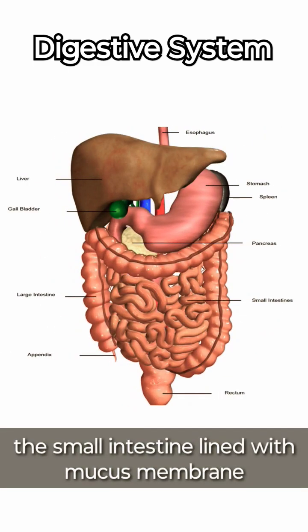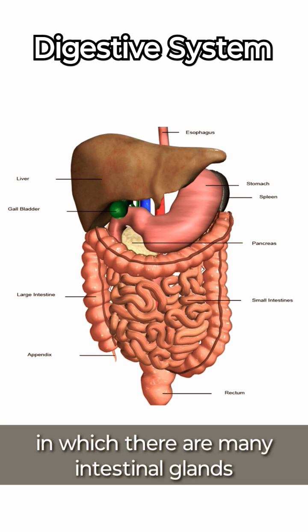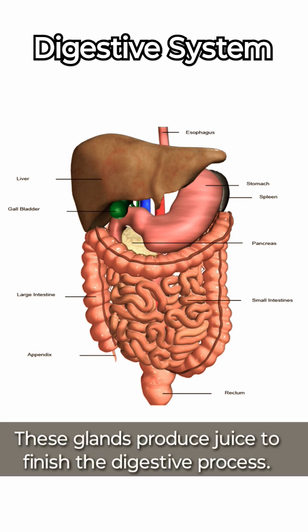The small intestine is lined with mucous membrane in which there are many intestinal glands. These glands produce juice to finish the digestive process.